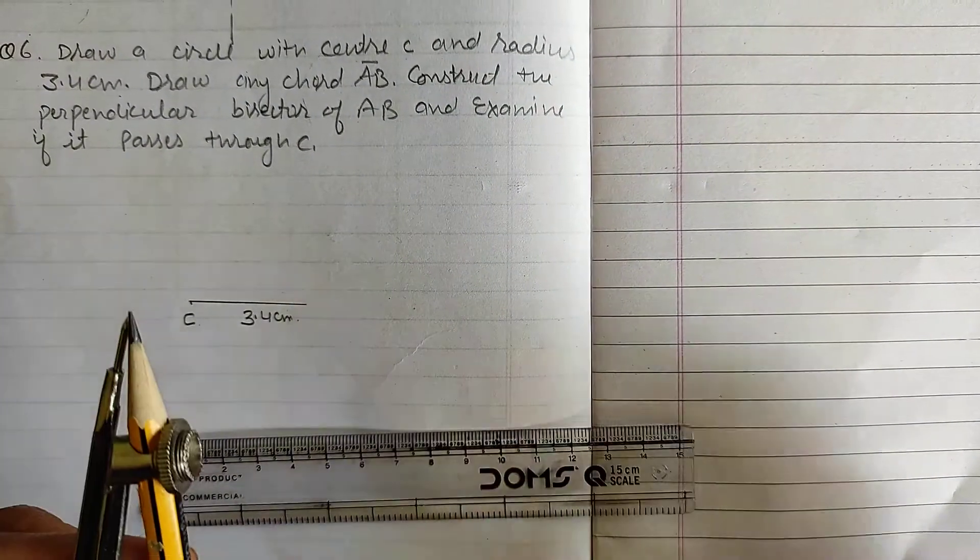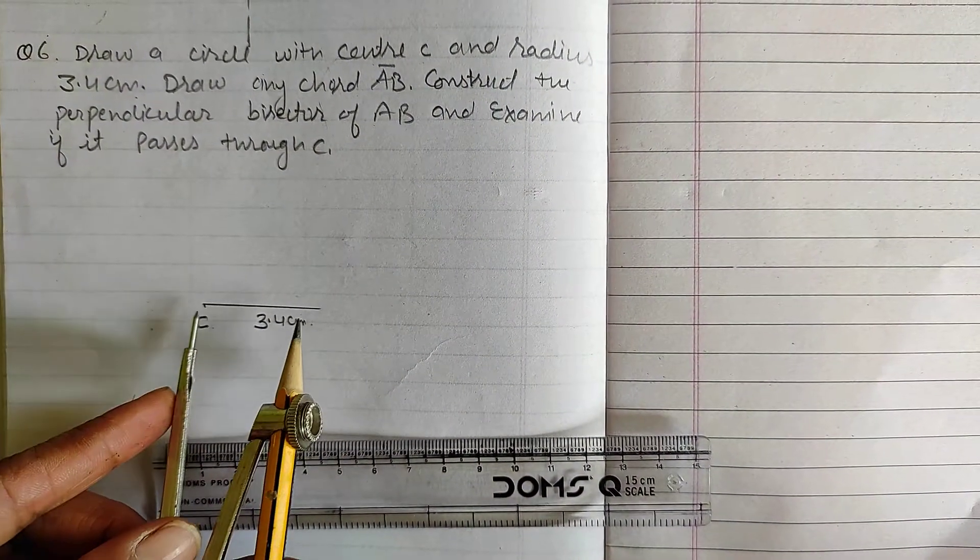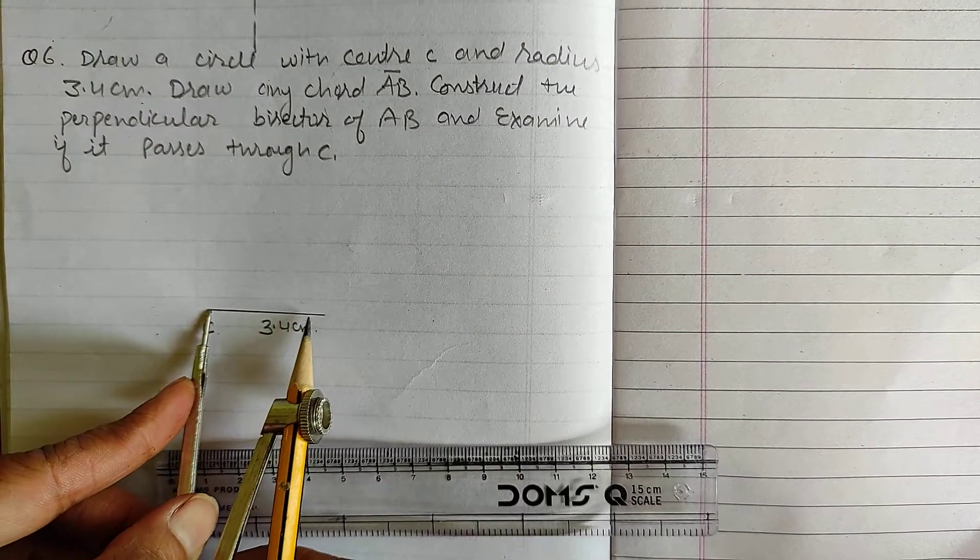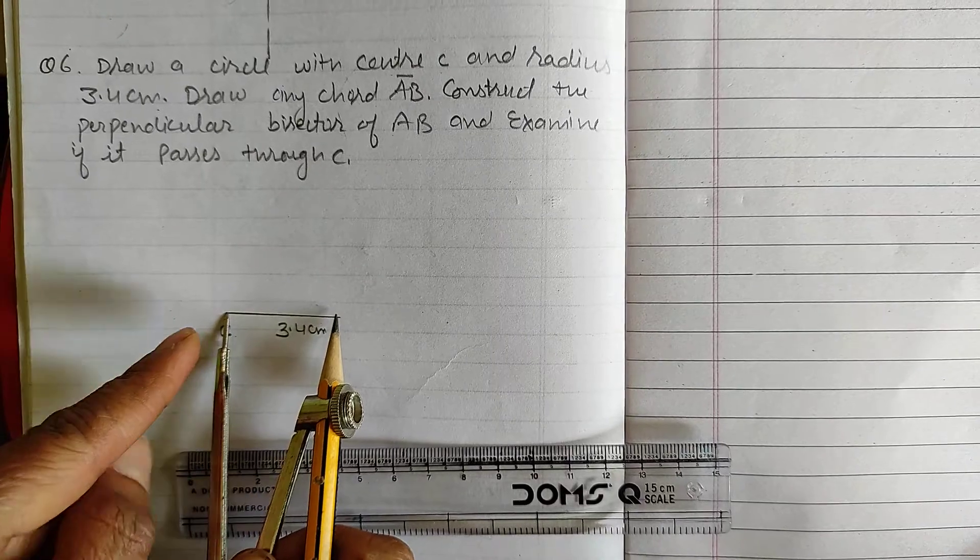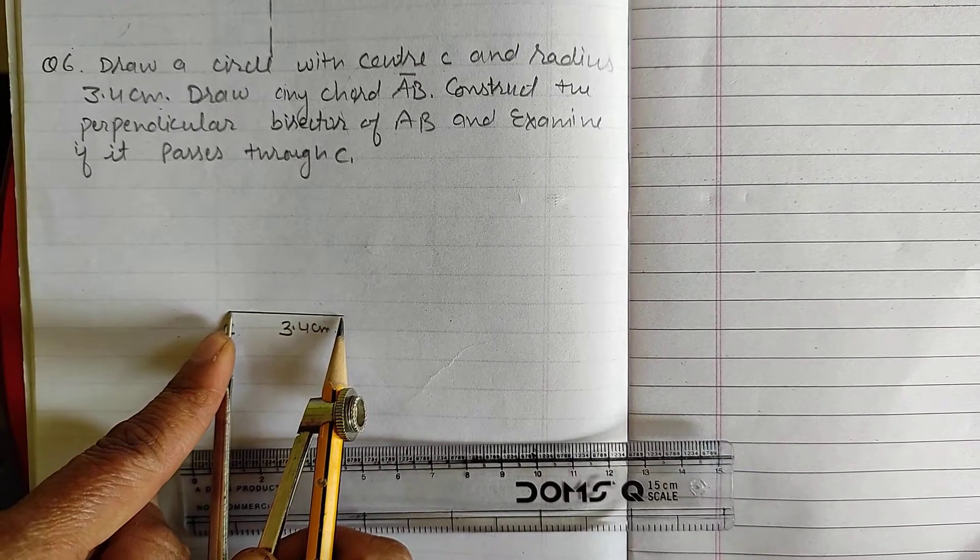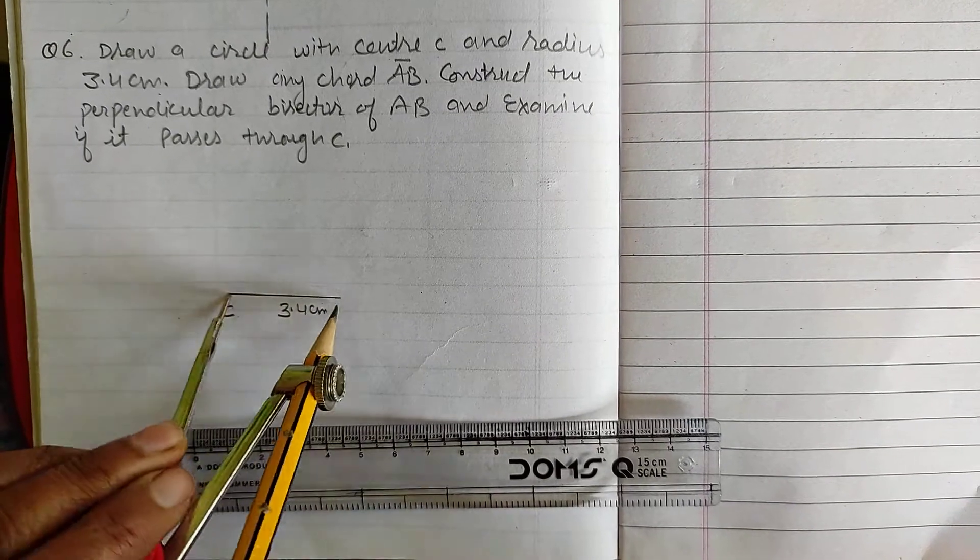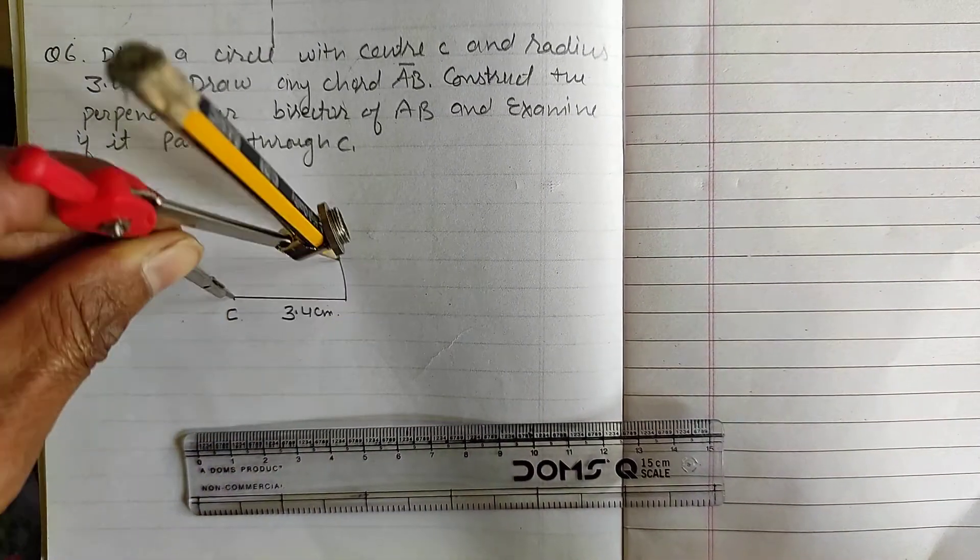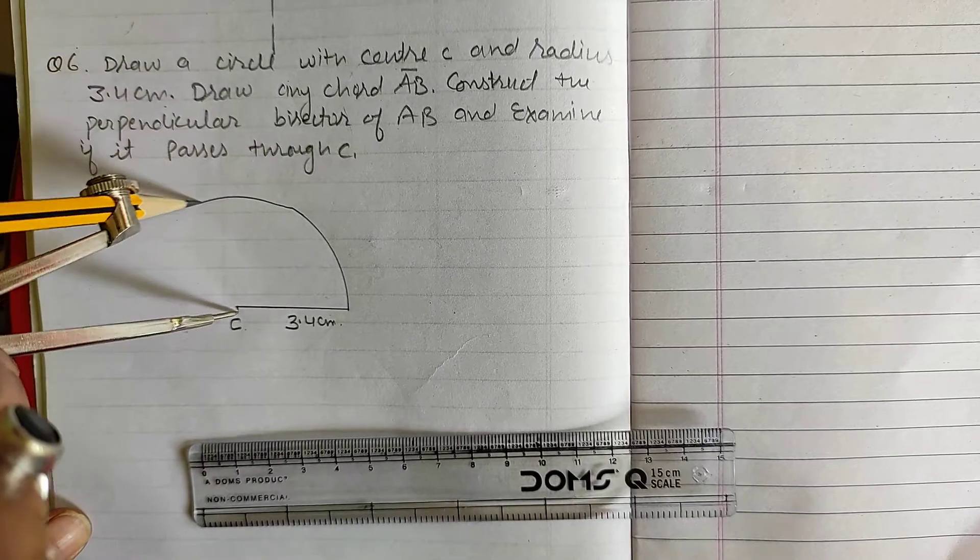Now, you have to take a compass. Now, you have to open the compass of radius 3.4 cm. Put the tip of the compass at point C and open 3.4 cm and draw a circle whose radius is 3.4 cm.